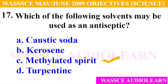Question 17: Which of the following solvents may be used as an antiseptic? A. Caustic soda, B. Kerosene, C. Methylated spirit, D. Turpentine. And the answer is C, methylated spirit. Methylated spirit may be used as an antiseptic.